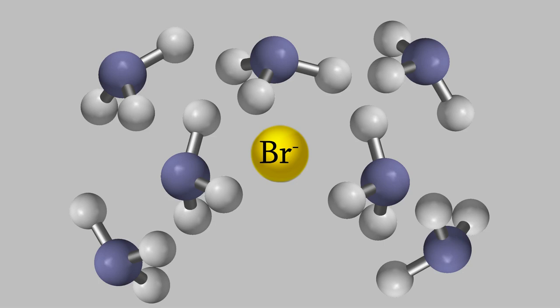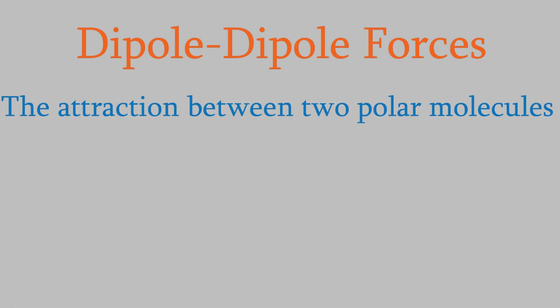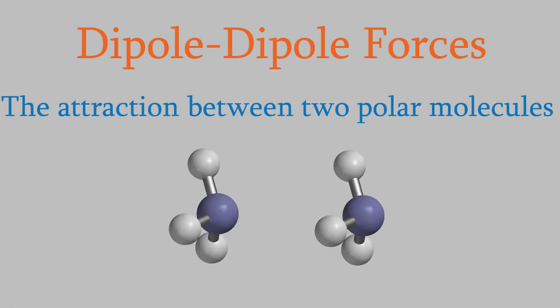The next type of intermolecular force is the dipole-dipole force. Again, the name tells you exactly how the force works — it's the attraction between two molecules that are dipoles. For example, if we have two ammonia molecules, the negatively charged side of one will be attracted to the positively charged side of the other one. And that's a dipole-dipole force.